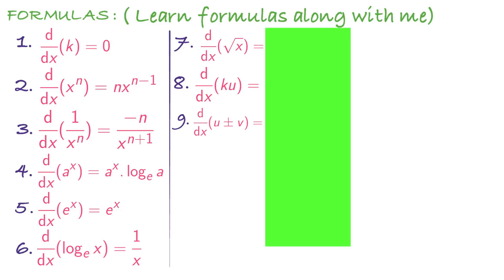You pause this video and try to revise these three formulas and come back. What is derivative of root x? Derivative of root x is 1 divided by 2 root x. What is d by dx of ku? It is k into d by dx of u — k into derivative of u. Ninth formula, d by dx of u plus v: derivative of u plus derivative of v.